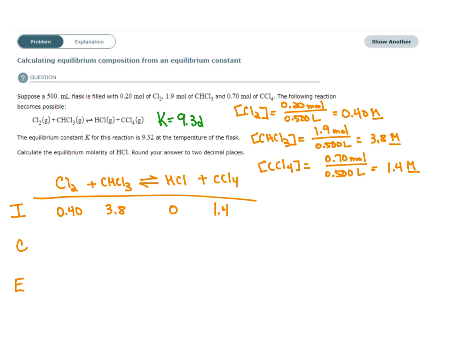For the change row, we use plus or minus the coefficient times X. It doesn't matter which side is plus and which is minus, as long as reactants all have the same sign and products all have the same sign. I like to start with reactants having a plus change. The coefficient for Cl2 is 1, so that's plus X. CHCl3 is plus X. HCl has coefficient 1 but is on the product side, so it's minus X. CCl4 is also minus X. Equilibrium concentrations are initial plus change: 0.4+X, 3.8+X, 0−X = −X, and 1.4−X.